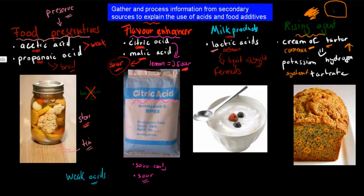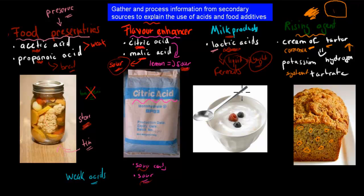To recap: acetic acid and propanoic acid are used as food preservatives because they kill bacteria, allowing food to be stored longer. Citric acid and malic acid are flavor enhancers that make things more sour — used in sour candy and juices. Lactic acid is used to ferment liquid milk into yogurt. And cream of tartar — potassium hydrogen tartrate — is used as a rising agent because it produces carbon dioxide as a byproduct, creating bubbles that give baked goods their spongy texture.